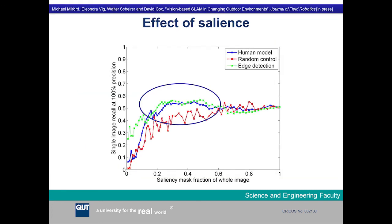This graph, which should be out in Journal of Field Robotics this year, shows that with both a human visual attention model and an edge detection-based visual attention model, you can achieve a higher absolute recall level while using only about a third of the image — so only about a third of the computation. You get better absolute performance and less computation.